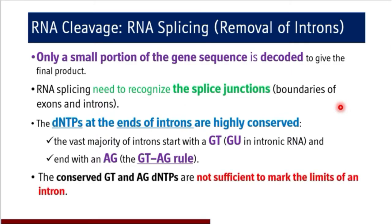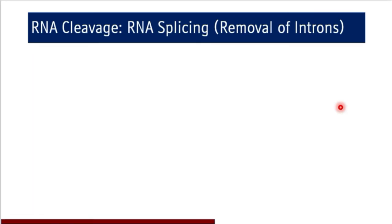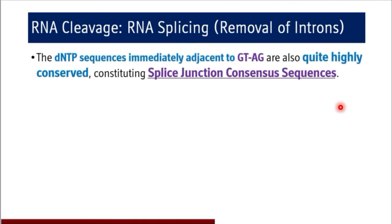The conserved GT and AG nucleotides are not sufficient to mark the limits of an intron. There are other mechanisms which bring about specificity to the RNA splicing mechanism. The nucleotide sequences immediately adjacent to GT and AG are also quite highly conserved. Not only GT and AG but other adjacent sequences are also highly conserved and they constitute splice junction consensus sequences, which add to the specificity of RNA splicing.